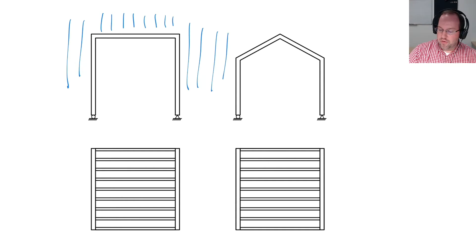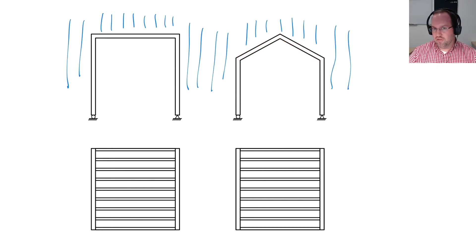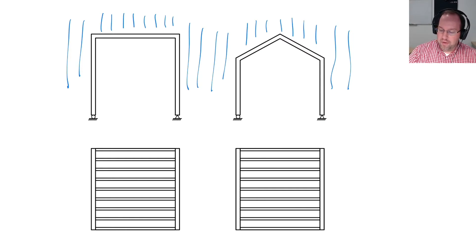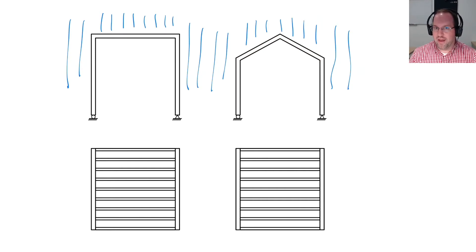Both buildings will collect the same total amount of snow load, despite the fact that one roof is sloped. In fact, the slope will cause a little bit of snow to fall off, so in reality the sloped roof collects slightly less. But despite having more surface area, it will — neglecting sliding — collect the same amount of load total. So how do we handle that as an engineer?